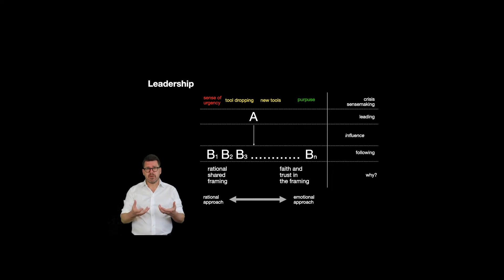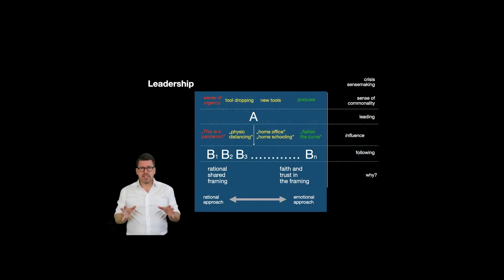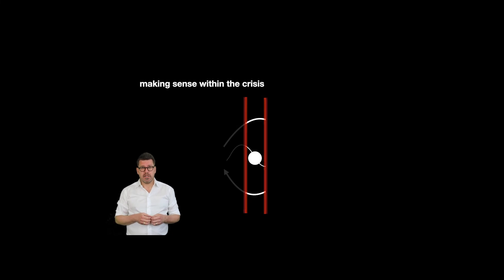The more heterogeneous the followers are with regard to their personal interests and goals, the more important and difficult this becomes. Therefore, apart from creating a sense of urgency and adopting new tools, it is central to create a sense of the commonality of the situation. We saw Emmanuel Macron talking about a war of his country, Angela Merkel speaking about the biggest challenge of Germany since World War II, and Queen Elizabeth referring to national pride. But all of these components together create only one thing in the first instance: to make sense within a crisis situation and become capable of acting collectively.